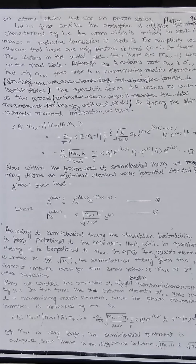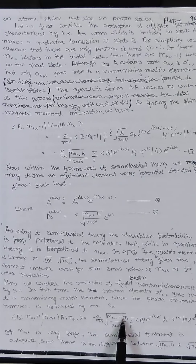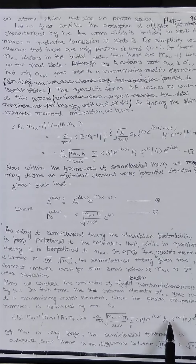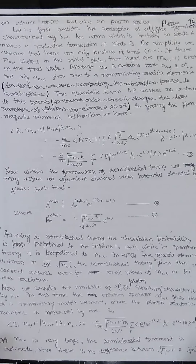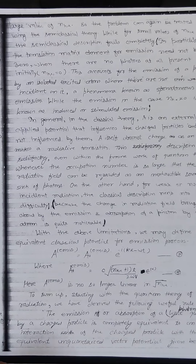Now we consider the emission of a photon characterized by (k, α). Here the creation operator a† gives a non-vanishing matrix element since the photon occupation number increases by one. We can write ⟨b, n_{k,α}+1 | H_int | a, n_{k,α}⟩ = -e/m · √((n_{k,α}+1) ℏ / 2ωV) · Σ_i ⟨b| e^{-ik·x_i} p_i · ε_α |a⟩ · e^{+iωt}. If n_{k,α} is very large, the semi-classical treatment is adequate since there is no difference between √(n_{k,α}+1) and √(n_{k,α}). For small values of n_{k,α}, the semi-classical description fails completely.